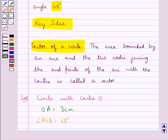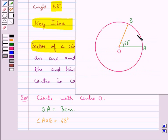As we know that the sector of a circle is the area bounded by an arc and the two radii joining the endpoints of the arc with the center. Here, consider any point C on the arc AB of the circle.